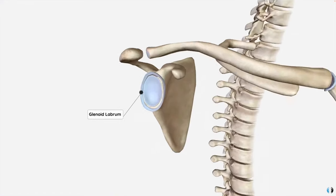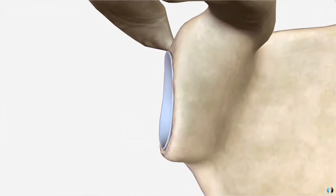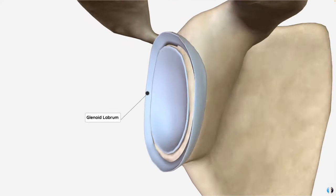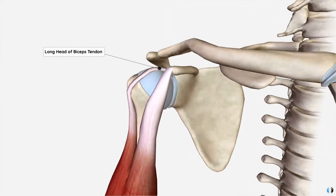A SLAP tear is a tear of the glenoid labrum, which is a cartilaginous ring that completely surrounds the glenoid fossa. The glenoid fossa is the socket that the humerus fits into to create the shoulder joint, and as you can see it's quite shallow. Therefore the glenoid labrum allows for the glenoid to be deeper.